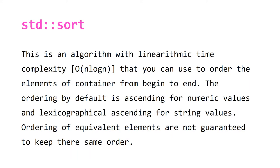The ordering by default is ascending for numeric values and lexicographical ascending for string values. Lexicographical just means the order you would find it in a dictionary. Ordering of equivalent elements are not guaranteed to keep their same order. Let's take a look at some examples to see how this function works.